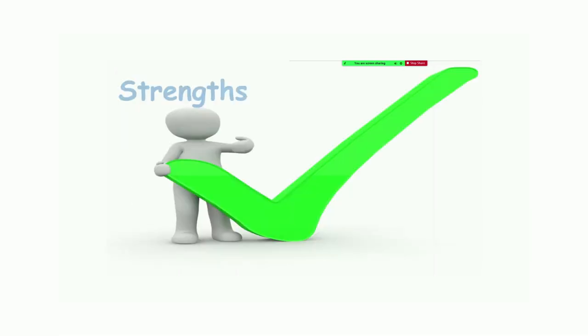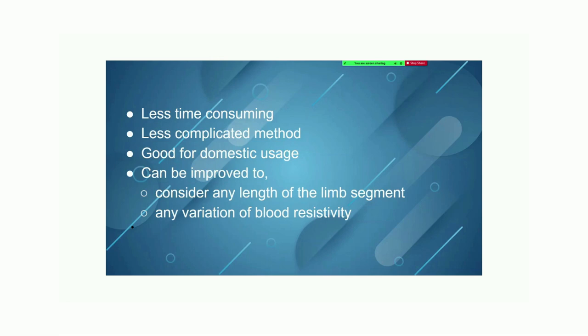Let's talk about strengths of our design. This method is less time consuming and less complicated. So, we can easily use this method at our home and see whether we have any abnormalities. If there are abnormalities, we can go to hospital or we can say to a doctor and we can get the proper medicines. And we can improve this model to any limb segment with any diameter and any length and any variation of blood resistivity.